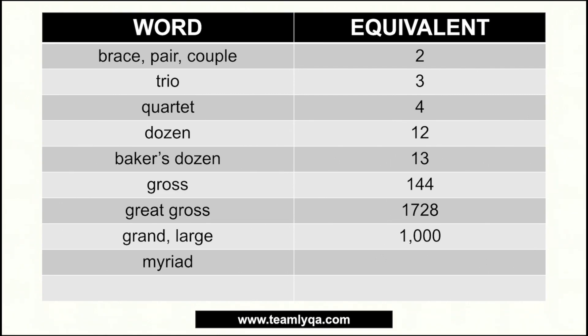Next is 'myriad.' In math, a myriad is actually equivalent to ten thousand. So if you say a myriad of mushrooms, that's literally ten thousand mushrooms. But in literature and English today, a myriad just means a lot of anything. Technically though, the equivalent number is ten thousand. Next is 'googol' — similar in sound to Google, but different. Googol is ten raised to one hundred — a really, really big number.